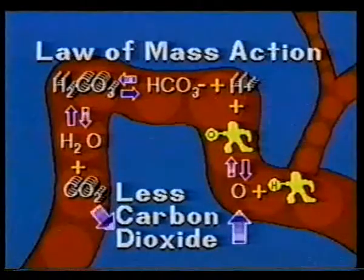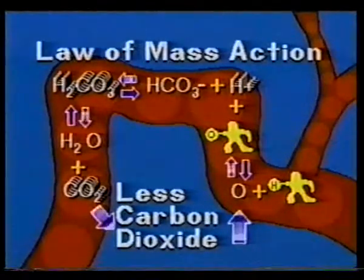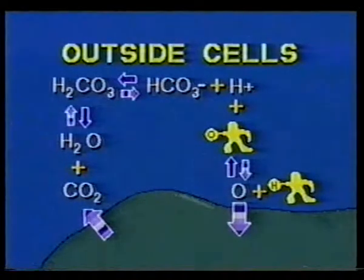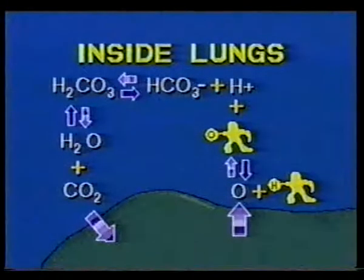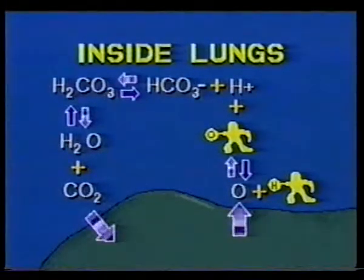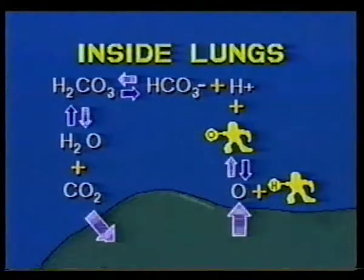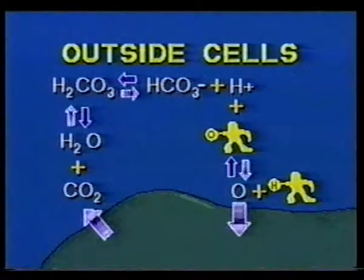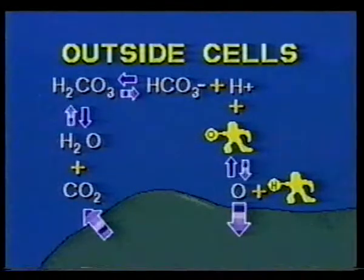The law of mass action is nature's own balancing act, but the body chooses the time and place — first at the cells, then in the lungs, and then in the cells again, and so on. Chemical seesaws like this one, that balance both oxygen and carbon dioxide in the blood, are important mechanisms of homeostasis.